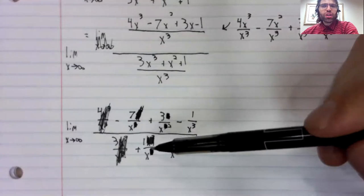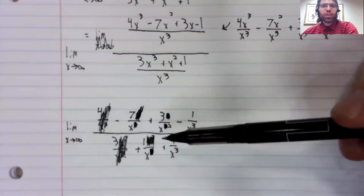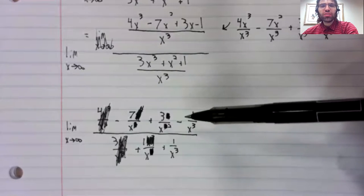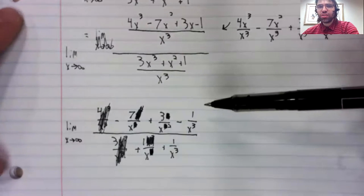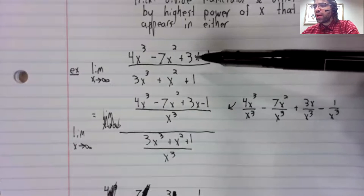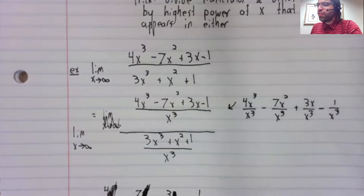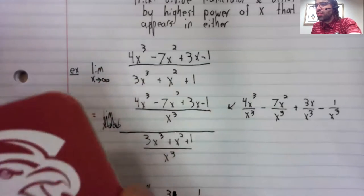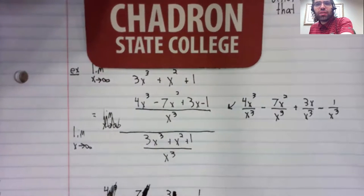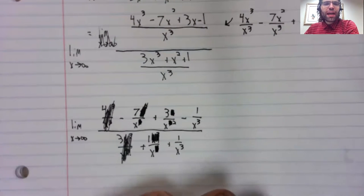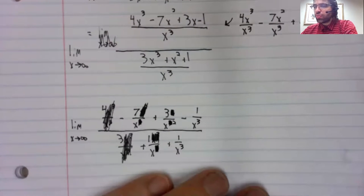And now the limit of a quotient is the quotient of the limits, as long as both of the limits exist. We couldn't use that fact up here because as x goes to infinity, this limit doesn't exist and this limit doesn't exist.